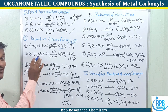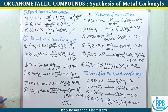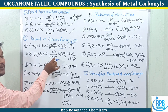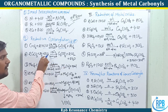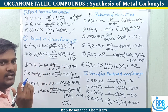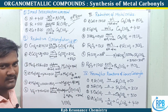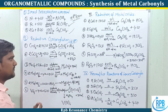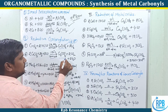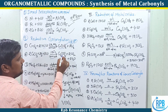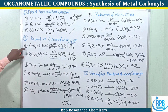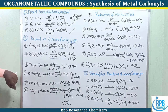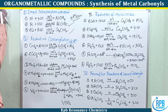The second example under reductive carbonylation: cobalt carbonate treated with two moles of hydrogen gas at 300 bar pressure along with eight equivalents of carbon monoxide gives Co2(CO)8. This is the commercial method for producing dicobalt octacarbonyl.